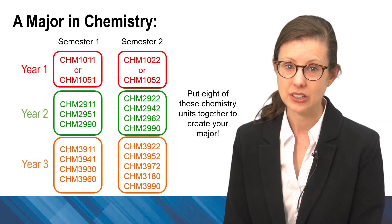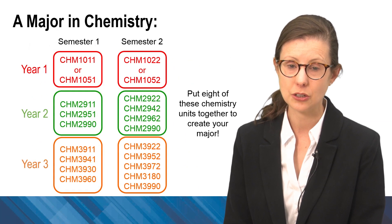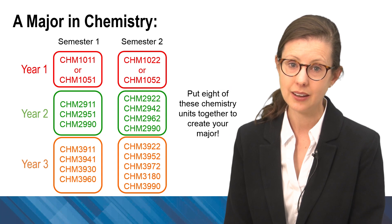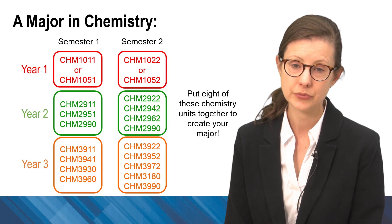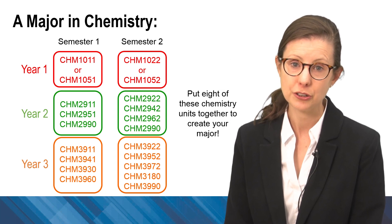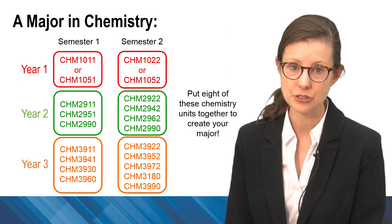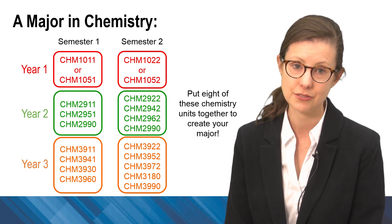To complete a chemistry major there are a lot of choices of units over the next few years. Here each of our second year units are coloured in green and our third year units are coloured in orange. The choice of units we offer mean that you can specialise in different topics depending on your interests after the first year.